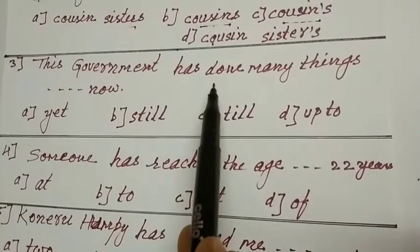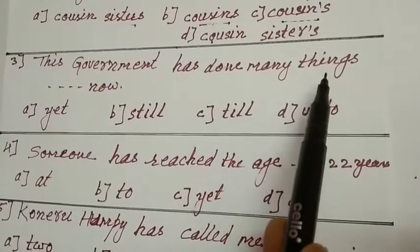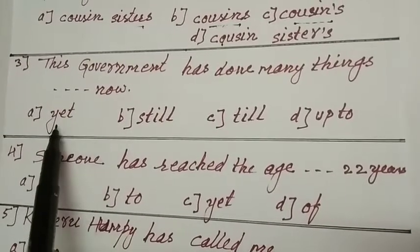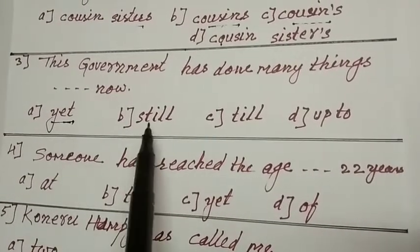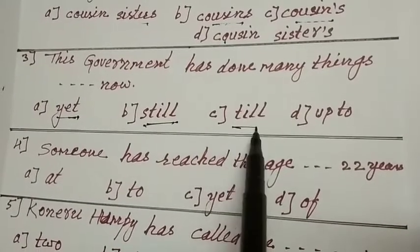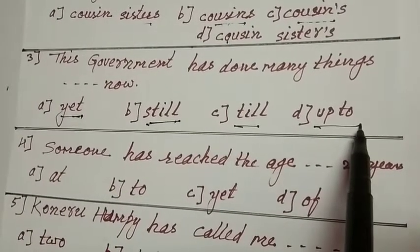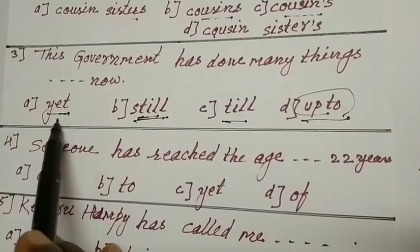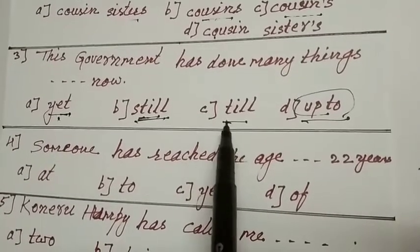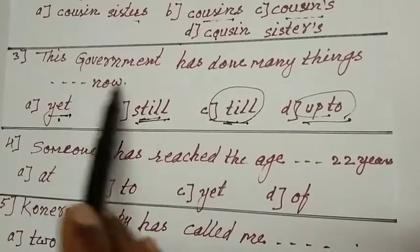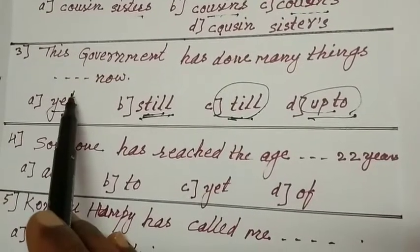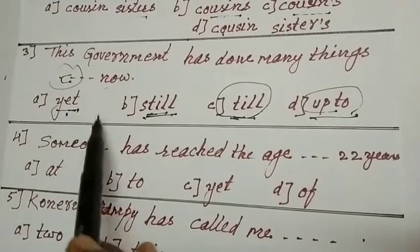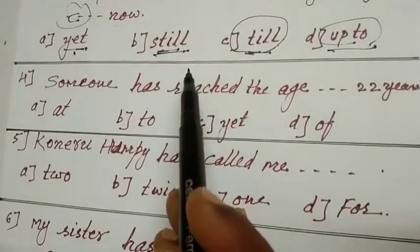This government has done many things, dash now. Till now. Till now, you have to write. See your answer, till. Till with two L's. This is the answer.